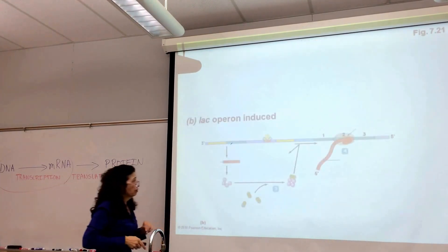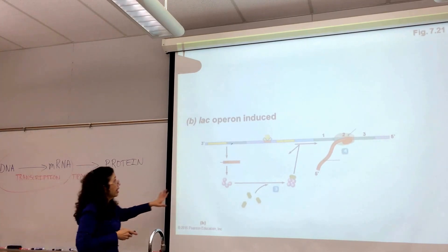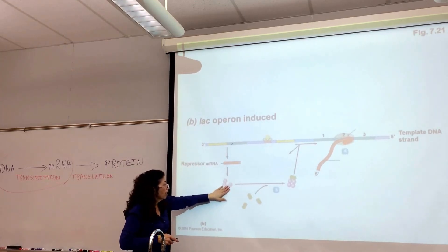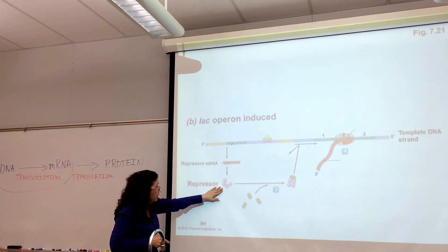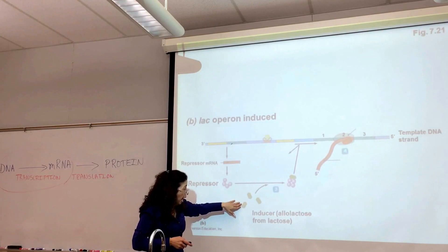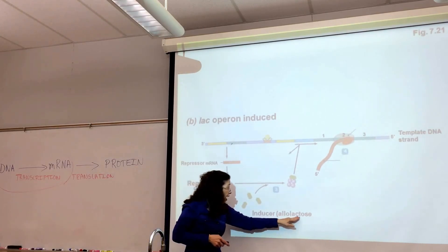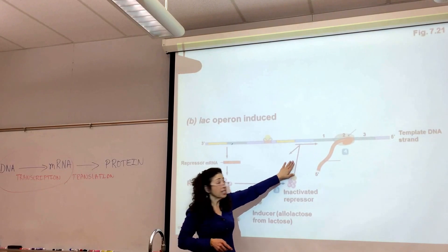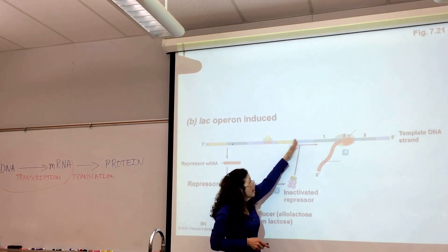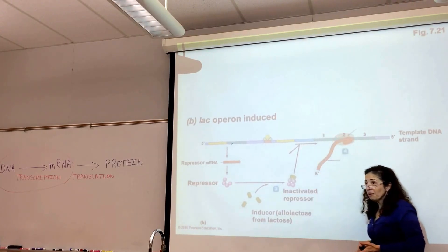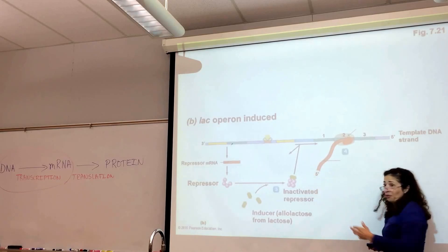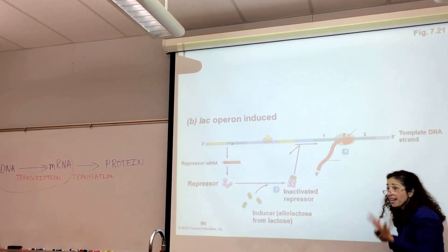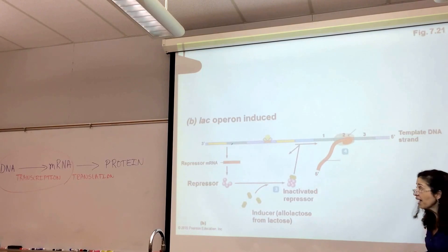The lac operon is an inducible operon because it can be induced. Here's your template DNA strand, your repressor mRNA, and your repressor being expressed. But now, because lactose is present, you're going to have a form of lactose — allolactose — physically attach to the repressor. The repressor therefore is going to be inactivated and it's not going to be able to attach to the promoter region, so it won't block RNA polymerase. RNA polymerase is going to be able to make that mRNA, transcribe those three genes, and in turn they'll be translated.